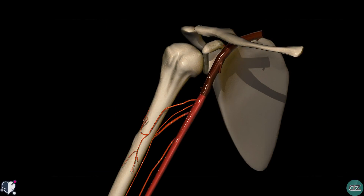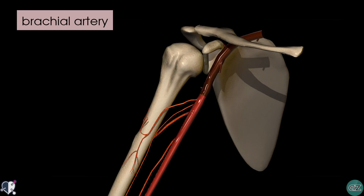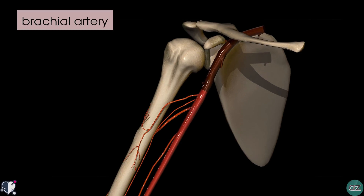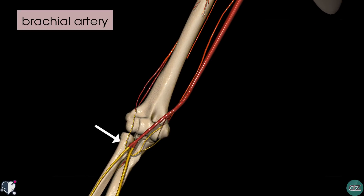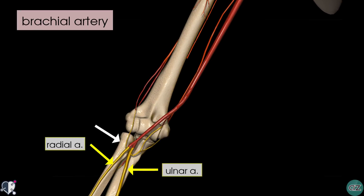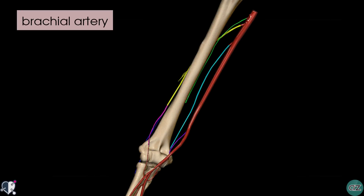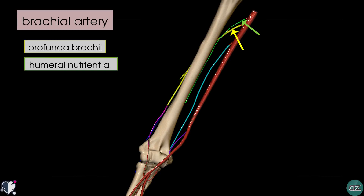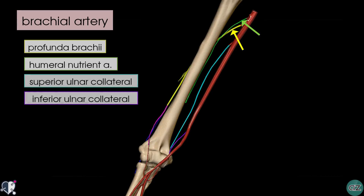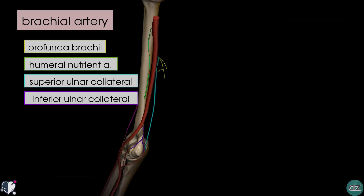The axillary artery then becomes the brachial artery at the level of the lower border of the teres major muscle, which marks the lower boundary of the axilla. The brachial artery runs down the arm to end at the level of the neck of the radius, where it divides into the radial and ulnar arteries. The brachial artery runs a superficial course just below the deep fascia, and it gives off four branches: the profunda brachii artery highlighted in yellow, the nutrient artery to the humerus in green, and the superior and inferior ulnar collateral arteries in light blue and purple respectively.